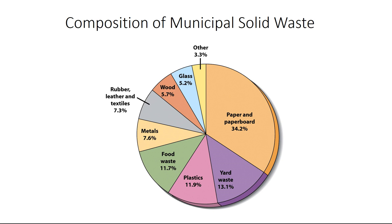If you were to dig through the items in an average household's solid waste, paper and paperboard would make up about 34.2% of it, yard waste 13.1%, with plastics and food waste making up additional portions.